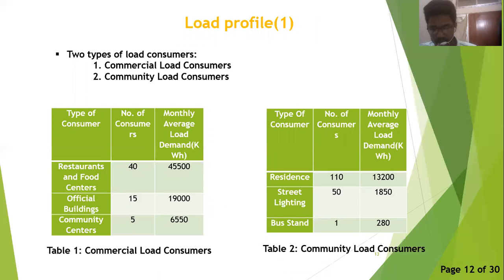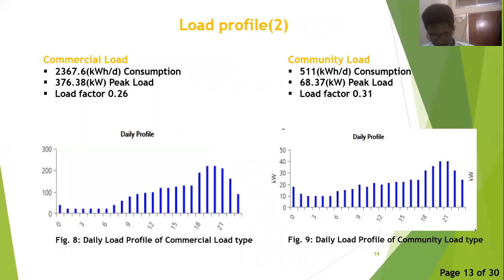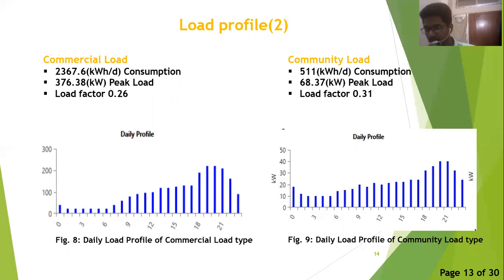About the load profile of the system: in our proposed system, two types of load consumers are defined — commercial load consumers and community load consumers. Their subsequent monthly average load demand are given in tables 1 and 2. The daily load profile of commercial and community type loads are given in figures 8 and 9. The commercial load has a 2,367 kWh/day consumption with a peak load demand of 376 kW. The community load has a 511 kWh/day consumption with a peak load of 68.37 kW.